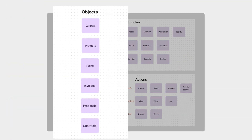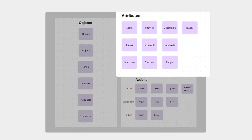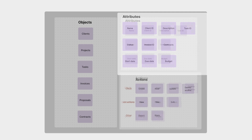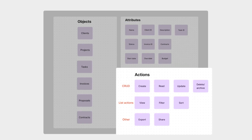Your core objects might be projects, clients, tasks, and invoices. Then ask: what are their attributes, like due date, status, and budget? And what actions can users take — create, edit, view, delete? Doing this upfront sets the foundation. It keeps your structure clean and flexible even as features evolve.